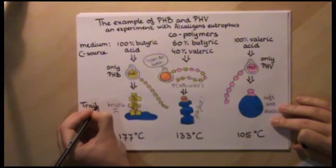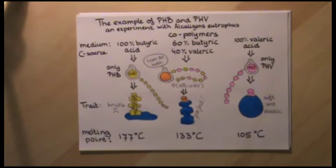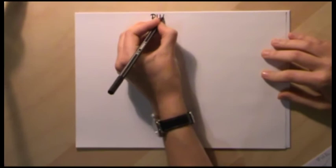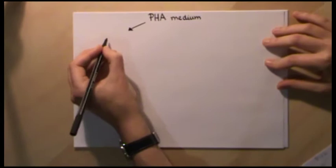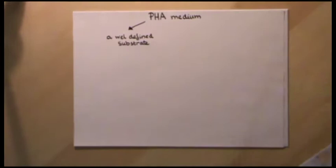Meaning that by changing the carbon source, you can change the traits of your polymer and in that way create bioplastics with different structures, properties, and applications. This was a simple example to show how the medium influences the PHA being formed.